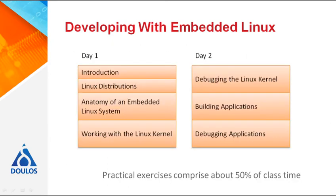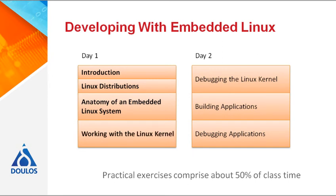Let's now look at the course agenda to give some more details about what you will learn. Once we've introduced the course, we will then go on to look at the possible sources for Linux in your embedded system — where do you get Linux from? In the anatomy section, we look at the main components of the system and introduce what we will be discussing in detail in the rest of the course. We will then investigate how the Linux kernel, the heart of the operating system, works and how to work with it, including some discussion of how drivers and modules work.